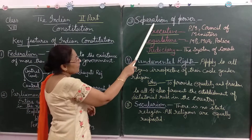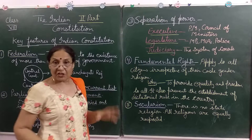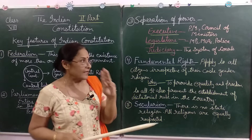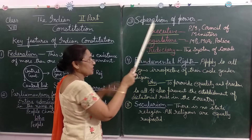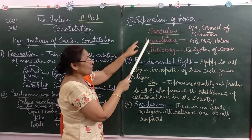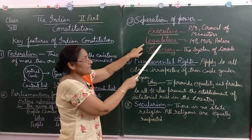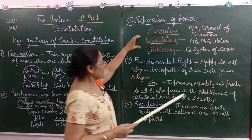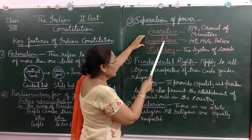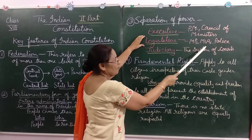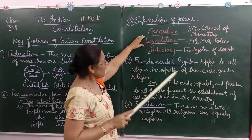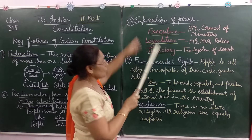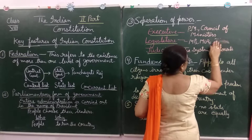Third is separation of power. Our government has three types of organs: Executive, Legislature, and Judiciary. The Legislature makes the laws for the country and consists of MPs and MLAs. The Executive consists of the Prime Minister, the Council of Ministers, and the Police — the Executive executes the laws made by the Legislature.